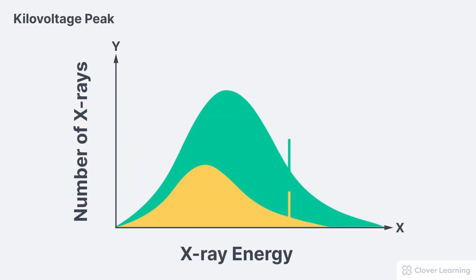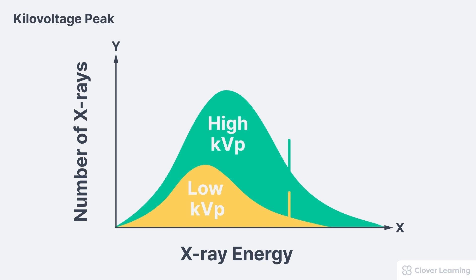Here's what that looks like on a graph. The lower curve was created using a lower kVp, and the larger curve was created using a higher kVp. The only factor we're changing for this graph is the kVp. When we change from low kVp up to high kVp, this results in increased beam quantity, which is why the curve gets taller with high kVp. It also results in increased beam quality or increased energy, which is why the entire curve is extended to the right.